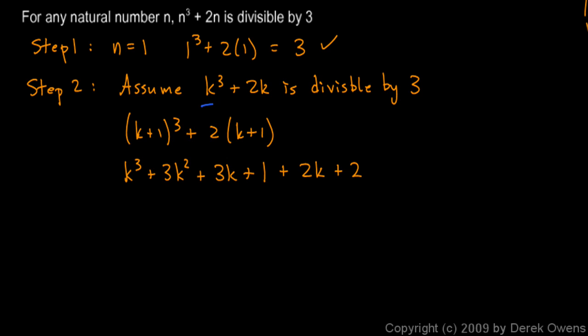Because we're trying to show that if it is, then this is also. So we're assuming that that is divisible by 3. So let's find something down here that can be written in terms of k cubed plus 2k.